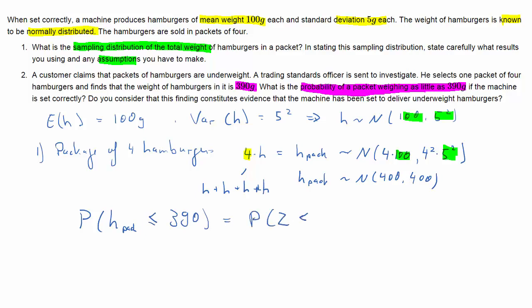We have the distribution of H_pack, and it's normal, so therefore we can straight apply our standardization formula: 390 minus the expected value 400 divided by the standard deviation. We get this equal to the probability that Z is smaller than negative 0.5, and if you look that up in a standard normal table you get a probability of 0.3085, so almost 31%.